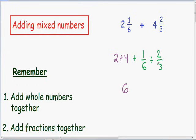And now we can add the two fractions together. However, we need to have common denominators to add or subtract fractions. So since we have a denominator of 6 and a denominator of 3, we have uncommon denominators. We need to make the denominators the same before we can add these two fractions.